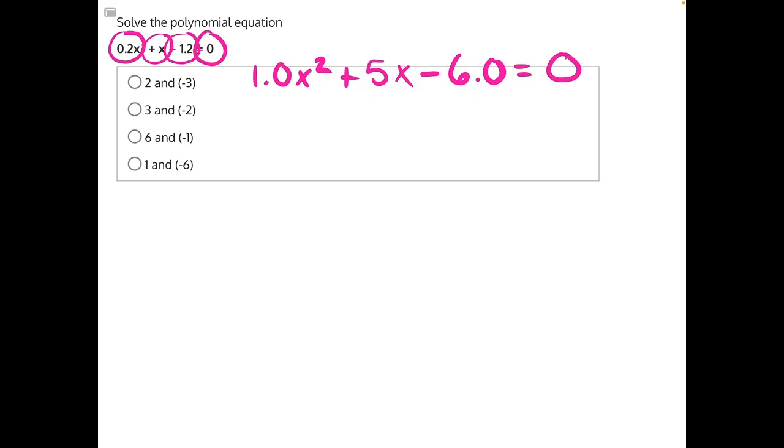Now let's simplify. 1 times x² would just give us x² plus 5x minus 6.0 we can just write as 6 equals 0. Now we have a much more manageable polynomial for us to solve.